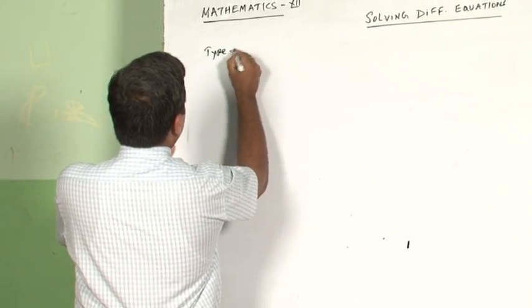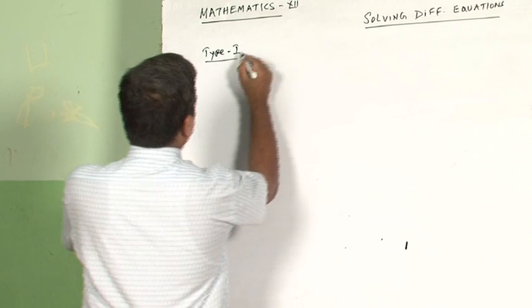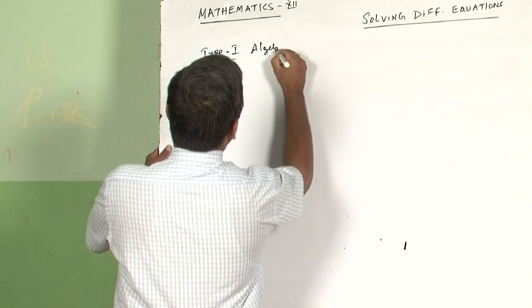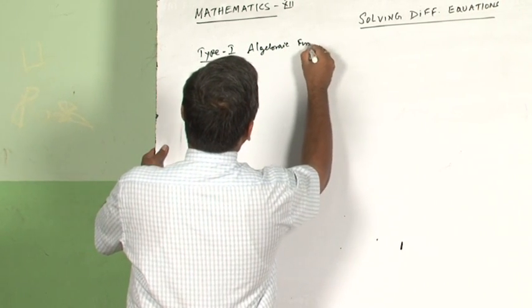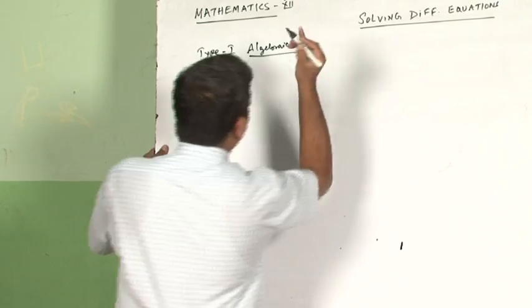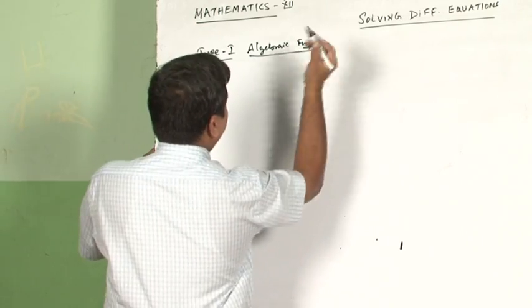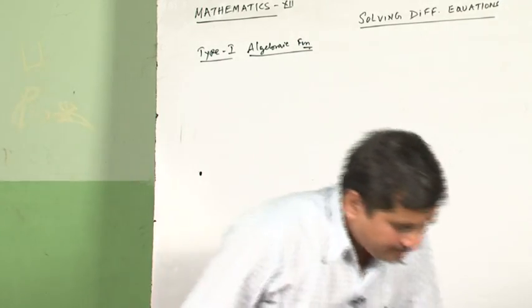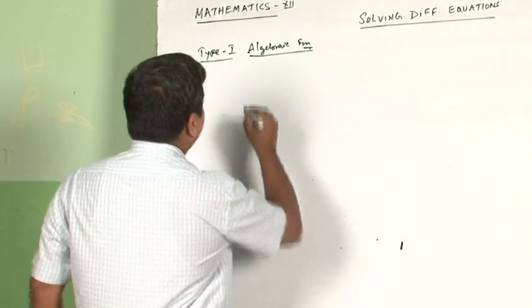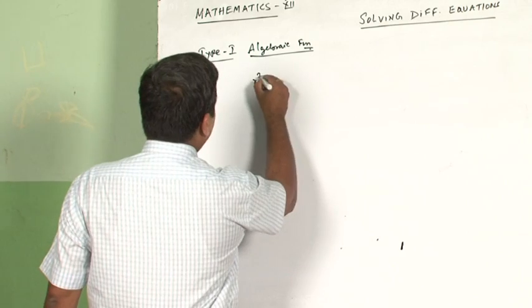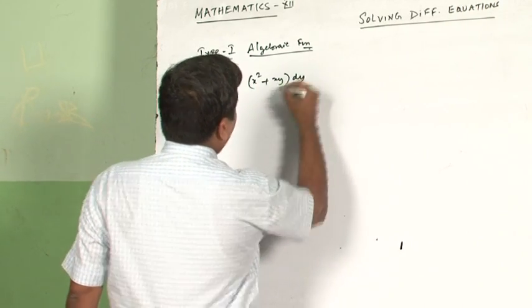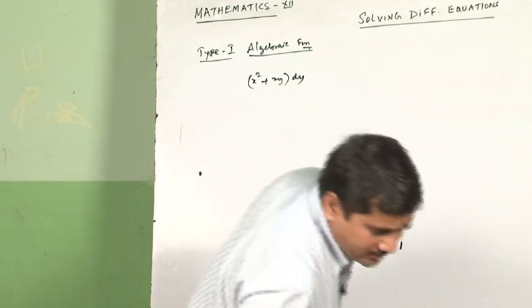Type 1 is algebraic, where an algebraic function is present — for example, x² + xy, as seen in a previous example. This is what characterizes a Type 1 algebraic function in homogeneous differential equations.